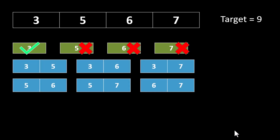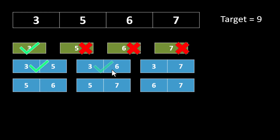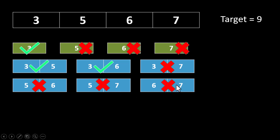Now let's take all the subsequences with length 2. The minimum and maximum in the first subsequence is 3 and 5 respectively; the addition gives us 8, which is less than 9, so it is valid. The next subsequence is 3 and 6; the result is 9, which equals 9, so it is also valid. The next gives us 10, then 11, then 12, then 13 — all greater than the target, so they are not valid subsequences.